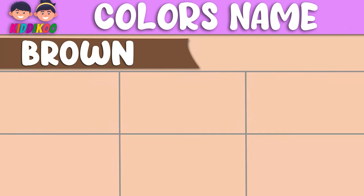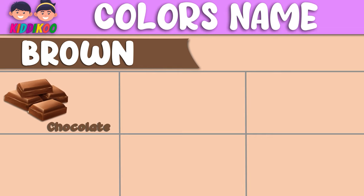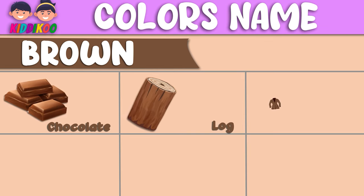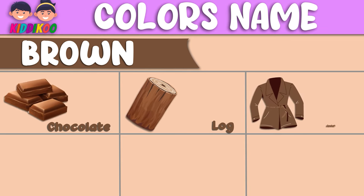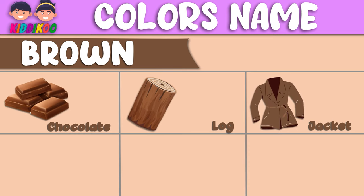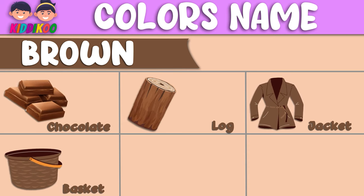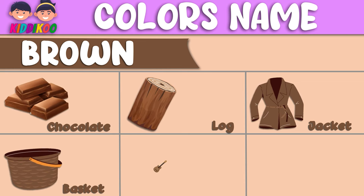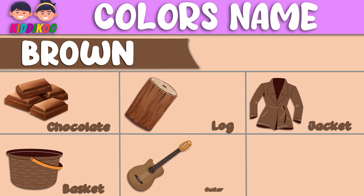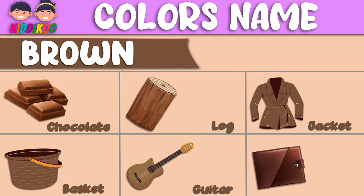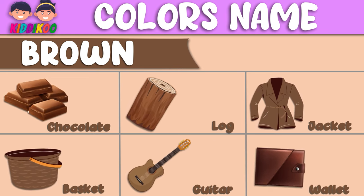This color is brown. Log — this log is brown. Jacket — this jacket is brown. Basket — this basket is brown. Guitar — this guitar is brown. Wallet — this wallet is brown.